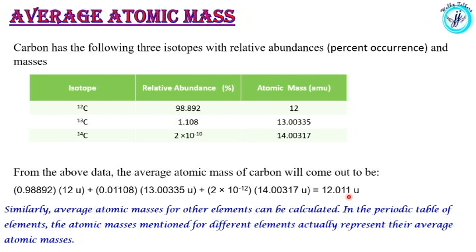The average atomic mass of carbon is 12.011u. AMU is also referred to as unified mass.